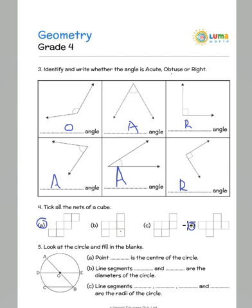The next question is look at the circle and fill in the blanks. Point dash is the center of the circle. We notice that point O is the center of the circle. Line segments dash and dash are the diameters of the circle. We notice that AB is a diameter because it joins two points along the periphery of the circle, the circumference, and it passes through the center. We have AB which is a diameter, and similarly we also have DE which is the other diameter.